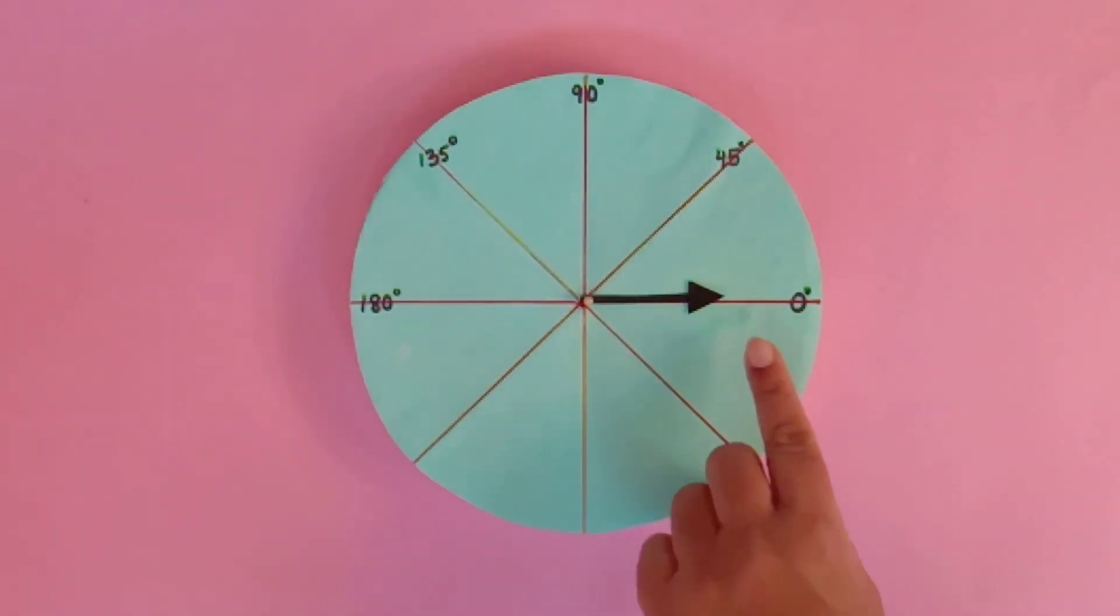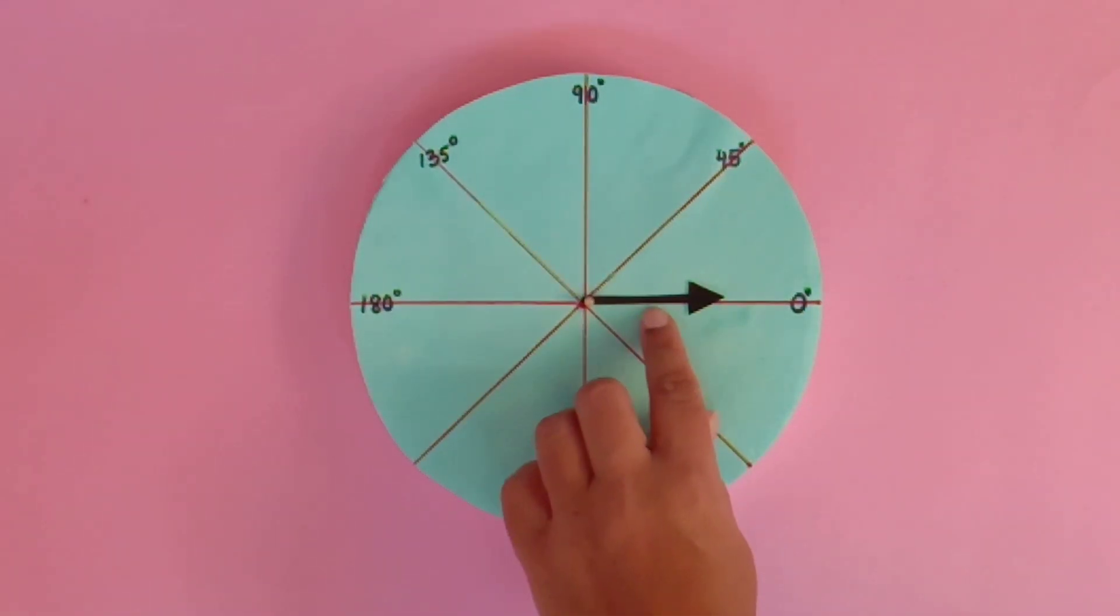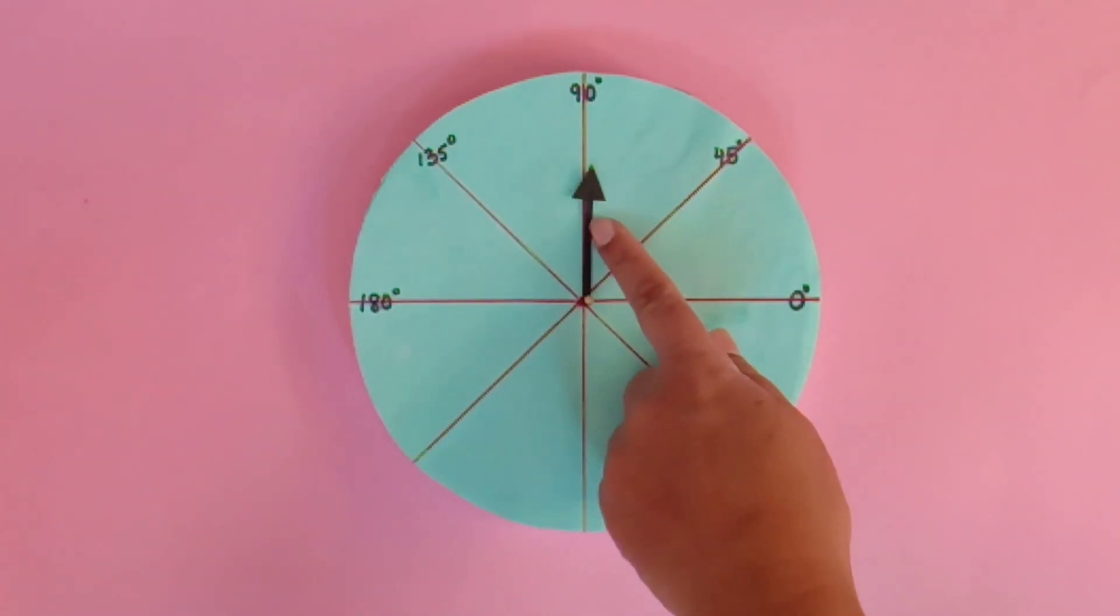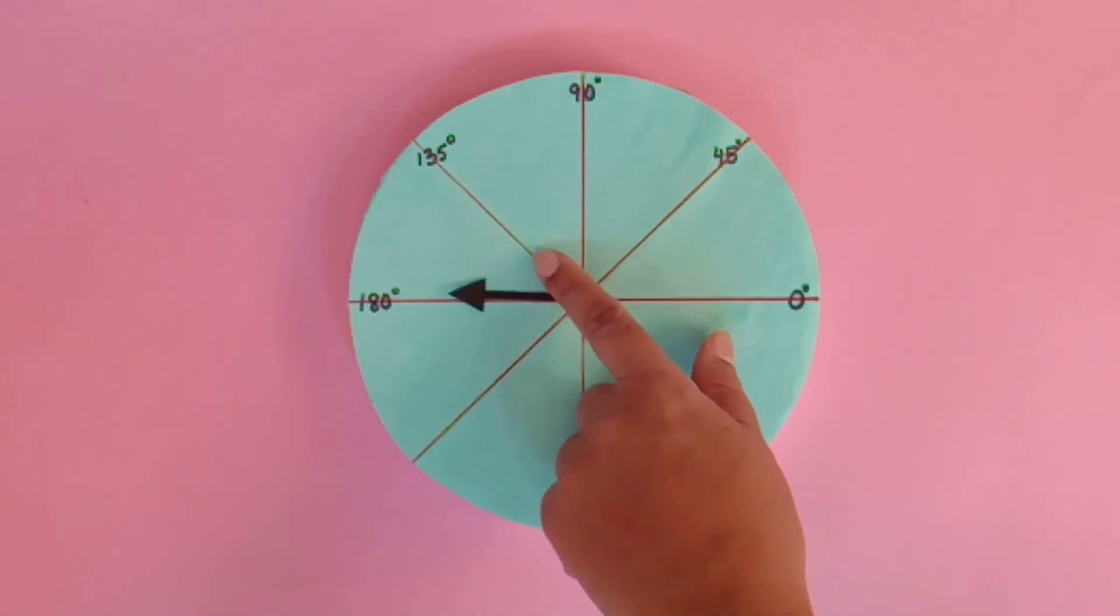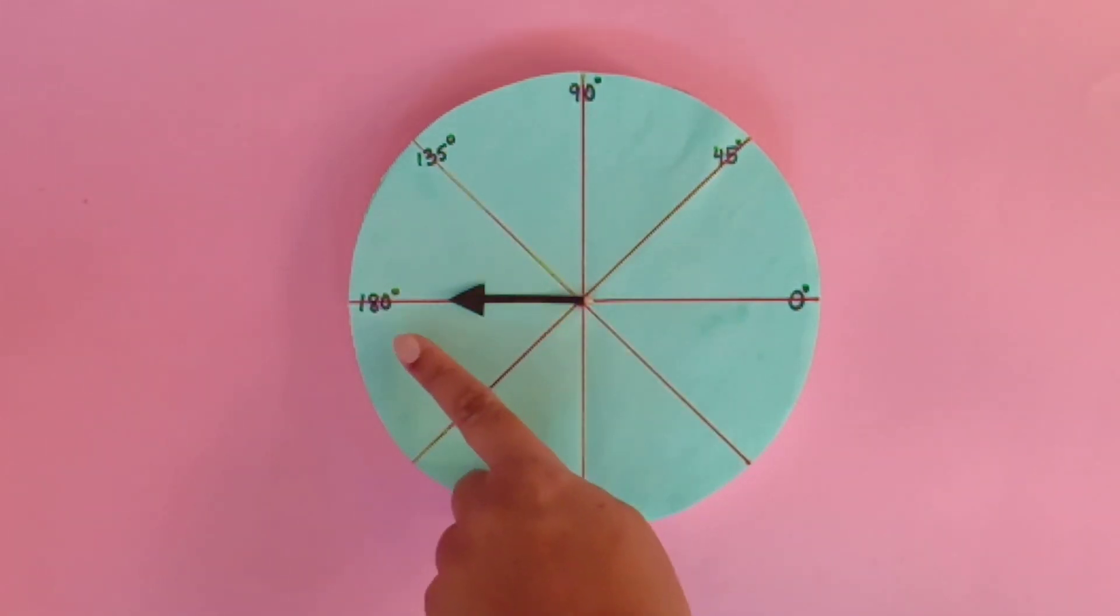See students, our arm is on 0 degree angle. Now arm is on 45 degree angle. Here, arm is on 90 degree or right angle. Now arm is on 135 degree angle. And now arm is on 180 degree angle.